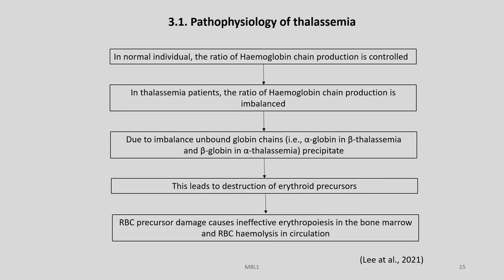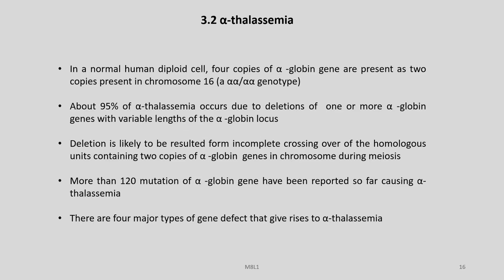In normal individuals the ratio of hemoglobin chain production is controlled, but in thalassemia patients the ratio is imbalanced. Due to this imbalance, unbound globin chains — alpha-globin in beta thalassemia and beta-globin in alpha thalassemia — precipitate. This leads to destruction of erythroid precursors. RBC precursor damage causes ineffective erythropoiesis in the bone marrow and RBC hemolysis in circulation.